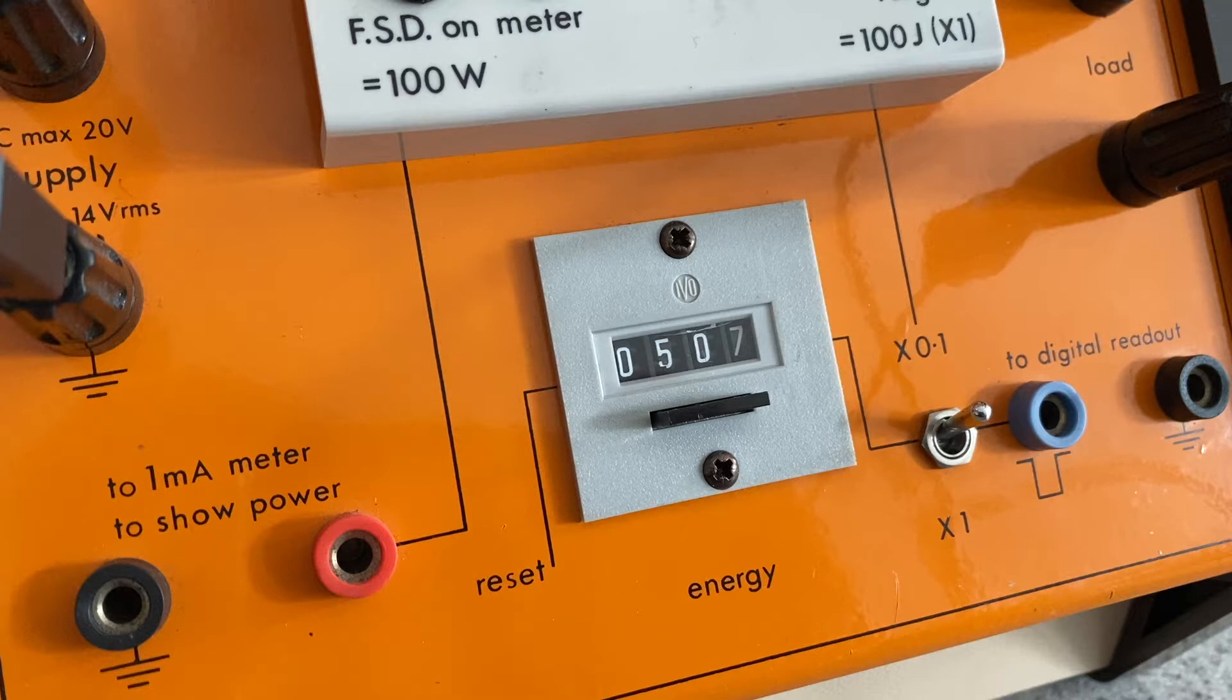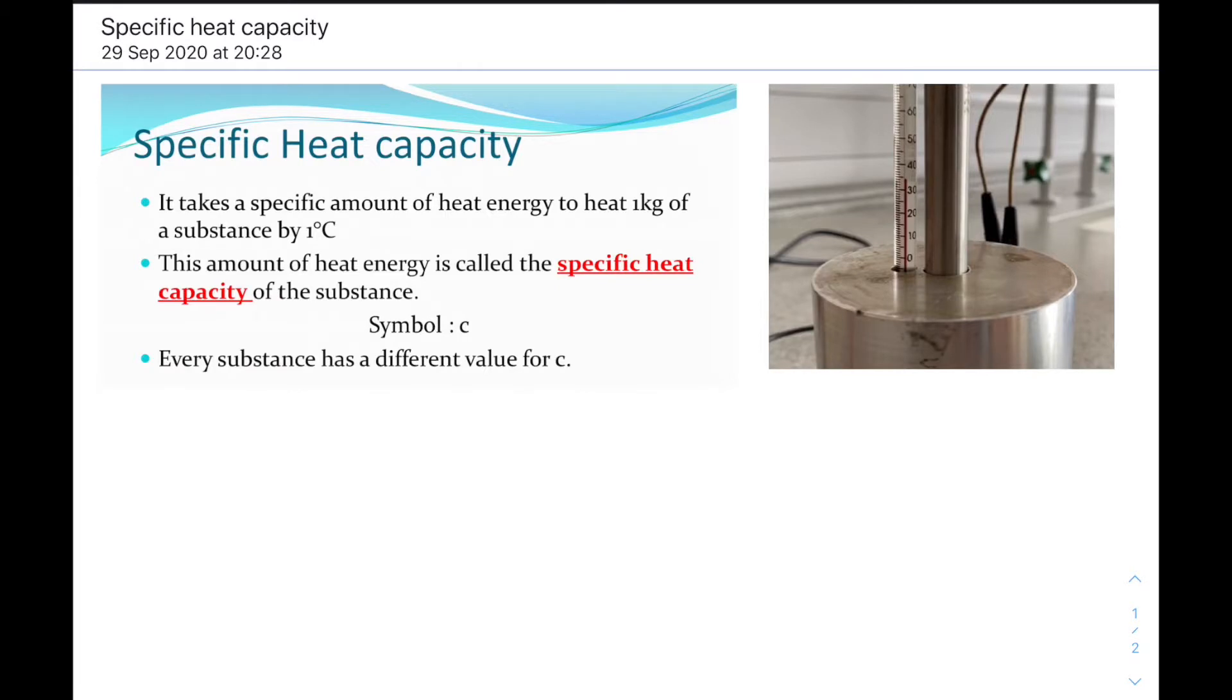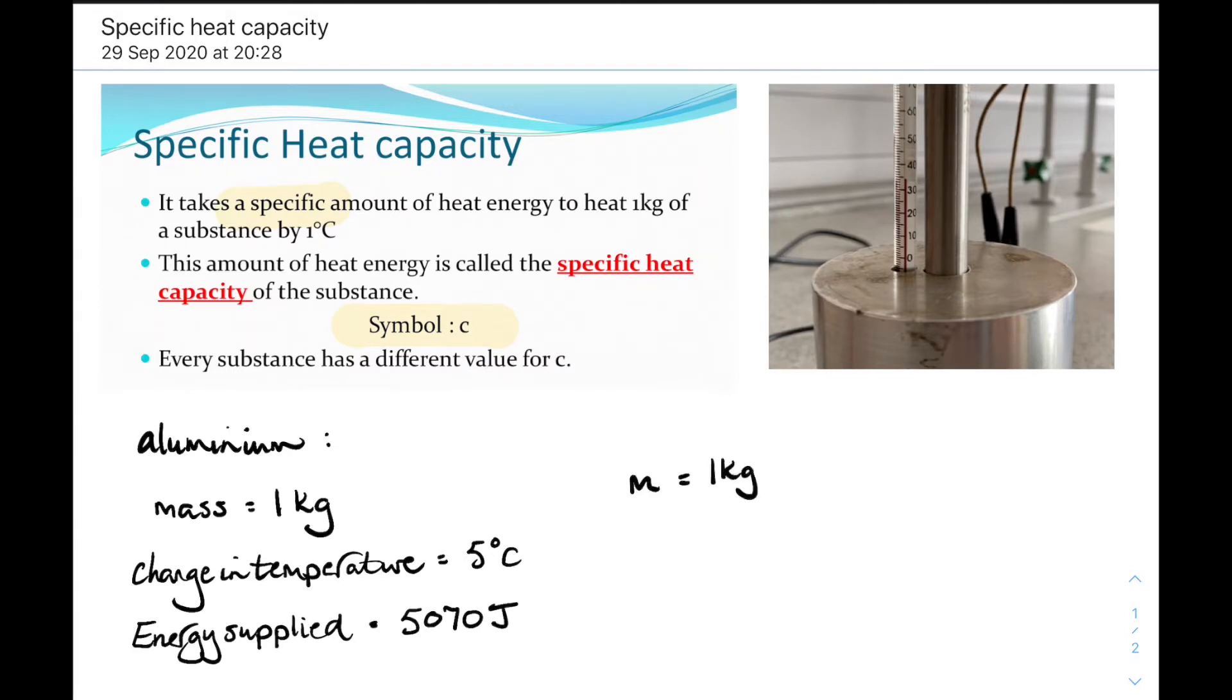Right. It takes a specific amount of heat energy to heat one kilogram of a substance by one degree C. Now that specific amount of heat energy is called the specific heat capacity of the substance. It's got a symbol c. Now we're going to work it out for aluminium. One kilogram of aluminium, we're going to heat it up by 5 degrees, and we supplied it with 5070 joules. We can write all that in shorthand.